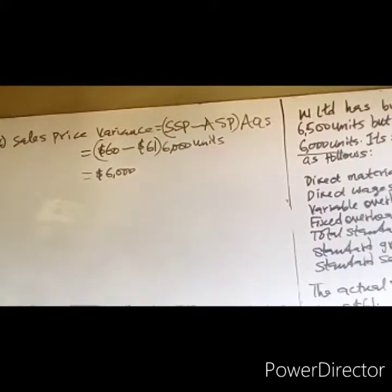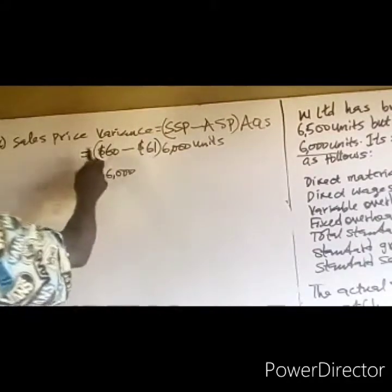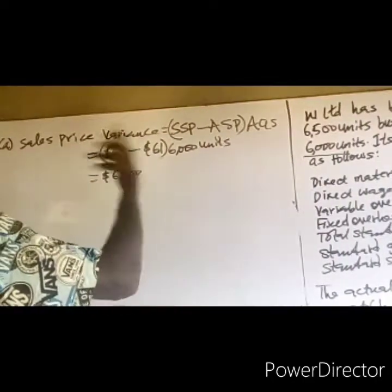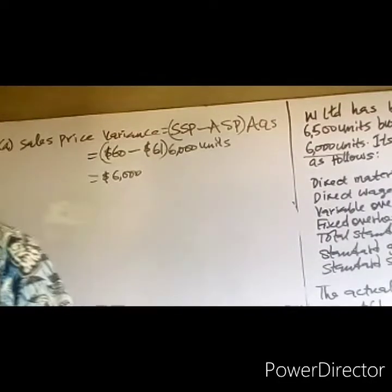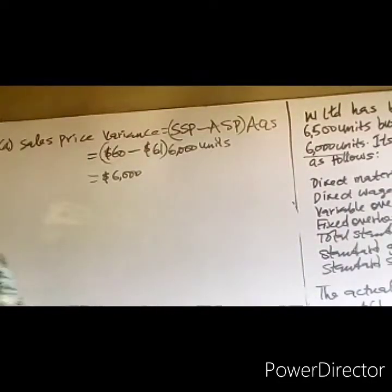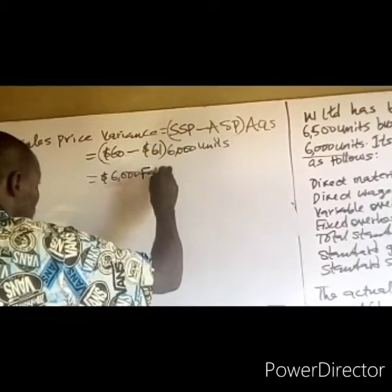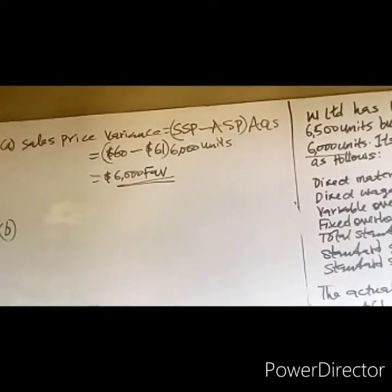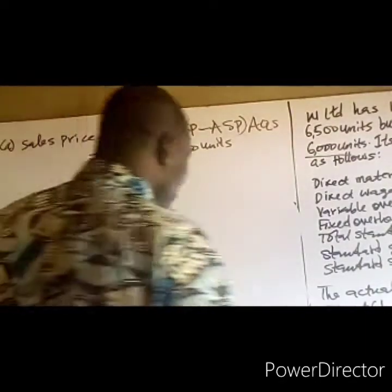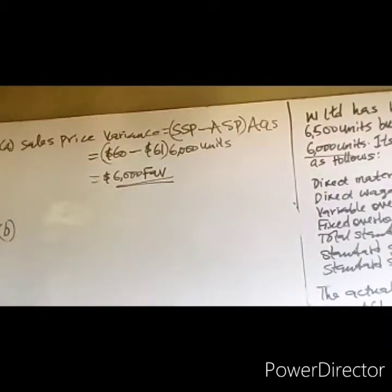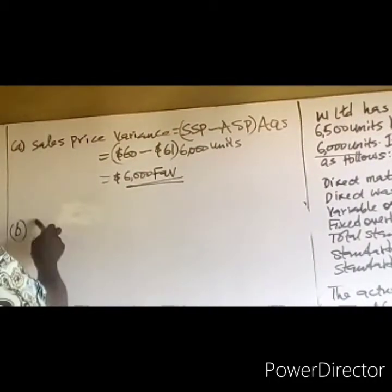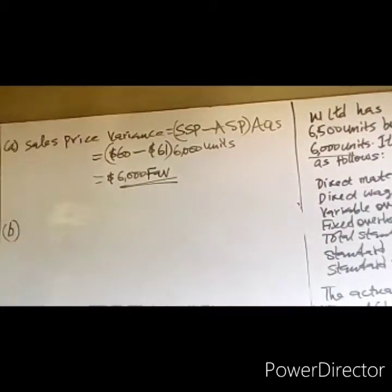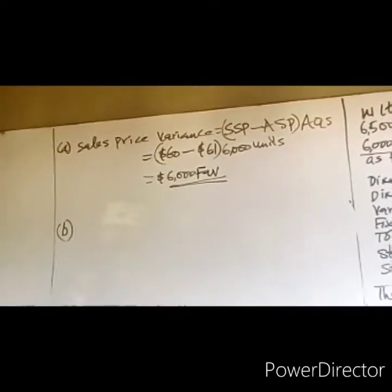The actual selling price is greater than the standard selling price, showing that the product sold above plan. That is a favorable variance. Therefore, the sales price variance is $6,000 favorable. Note that the sales price variance will be the same under both absorption costing and marginal costing — the difference between the two methods only arises in the volume variance.